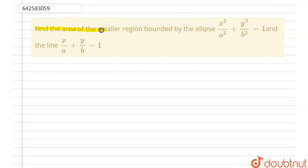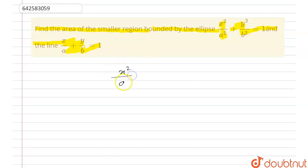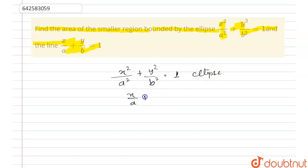The question says: find the area of the smaller region bounded by the ellipse x²/a² + y²/b² = 1 and the line x/a + y/b = 1.